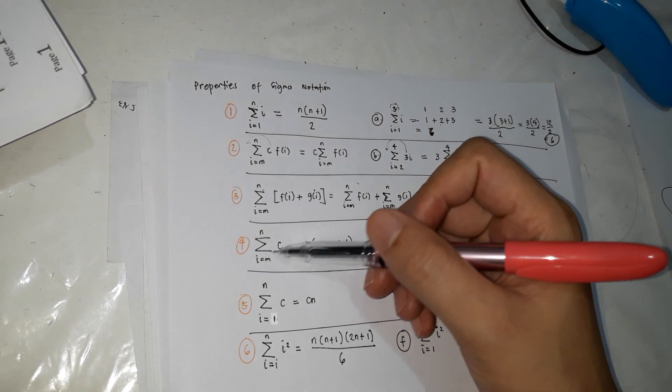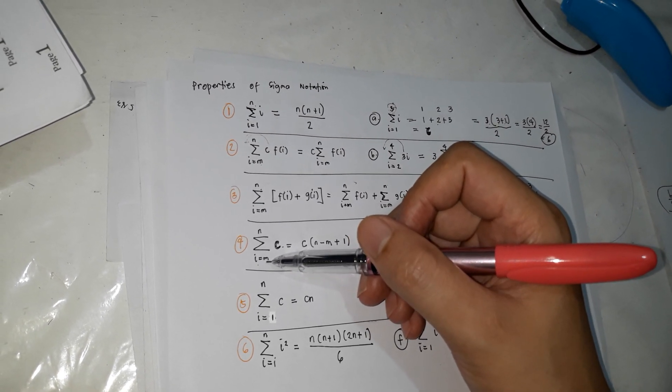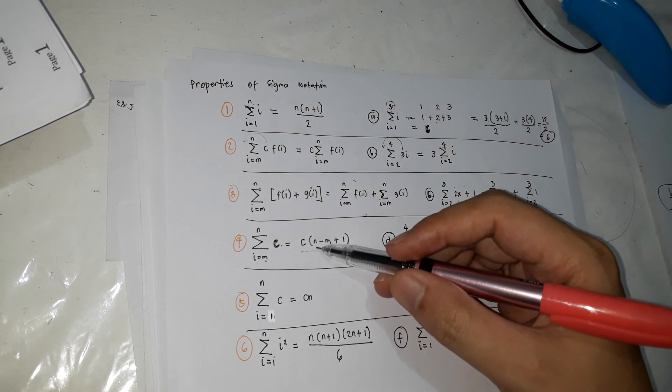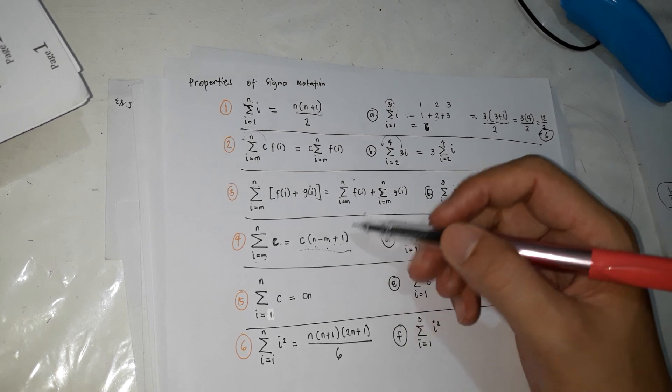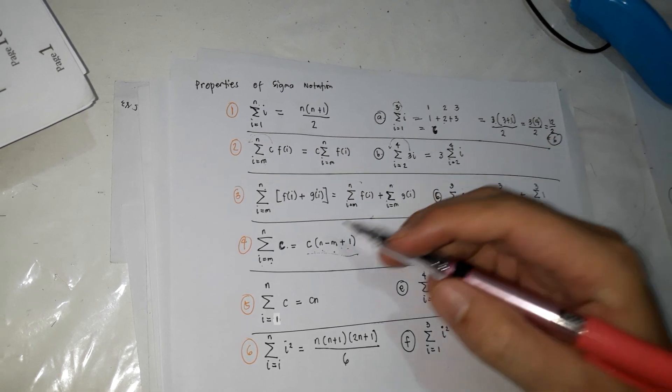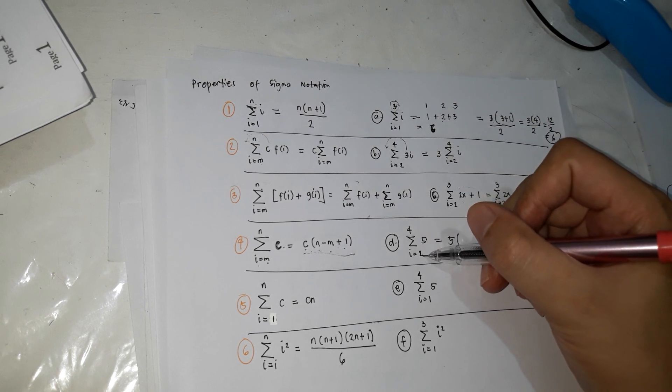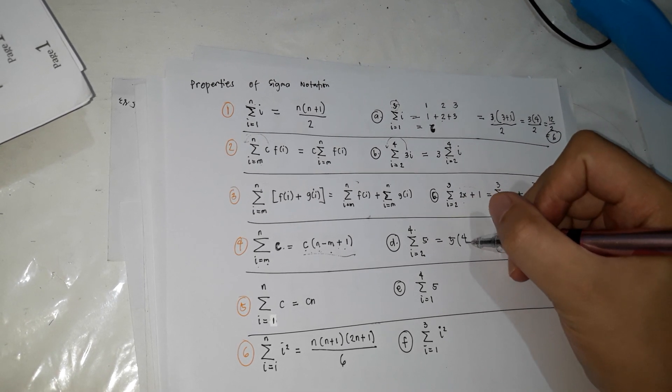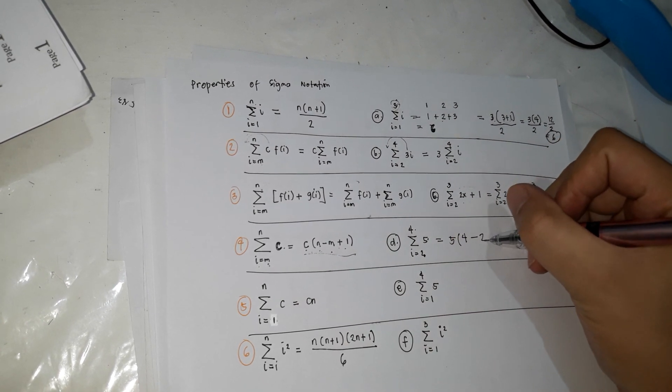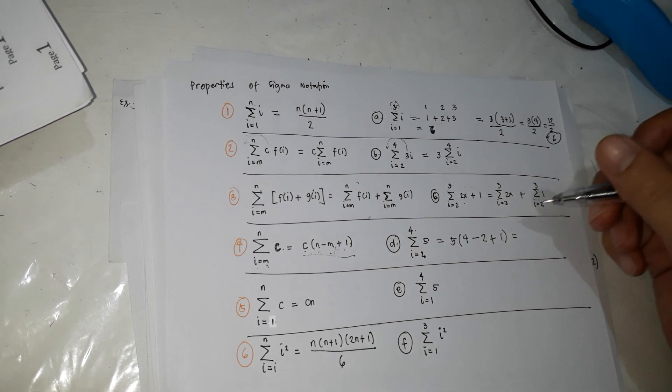So next, kapag summation of C, ang C is a constant, number sya, I from M to N. So ang mangyayari, ganito na lang ang solving. C times N minus M plus 1. So kapag ganito, 5C, N is 4, minus ka ng M, sa baba, 2, plus 1. So ganyan ang how to solve those.